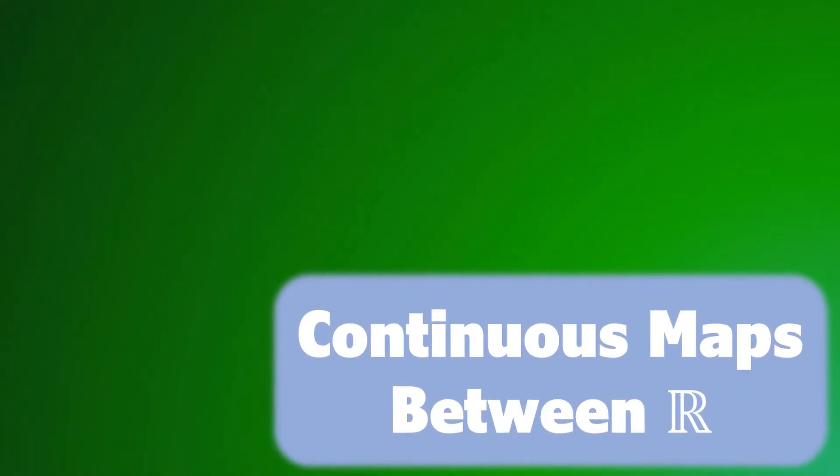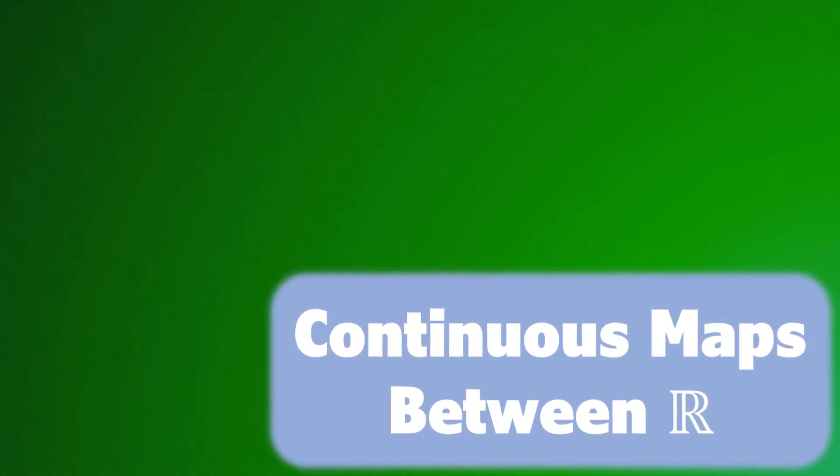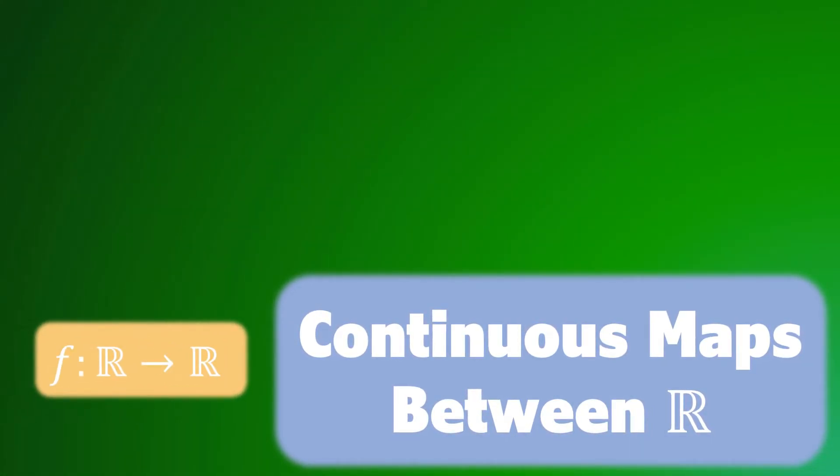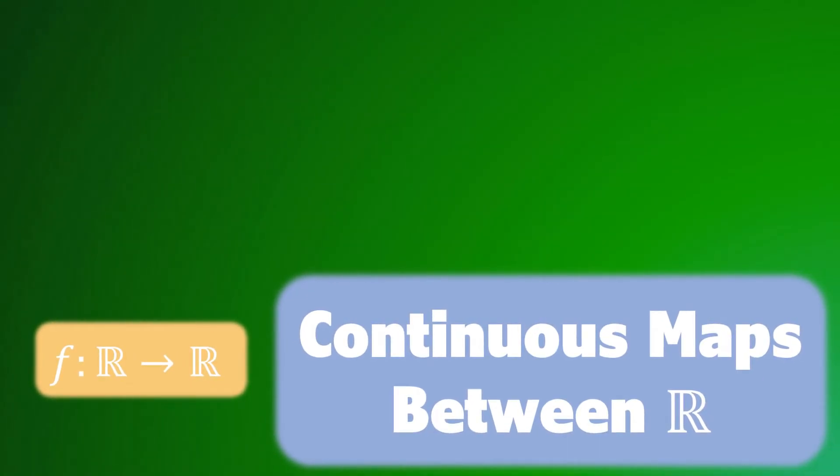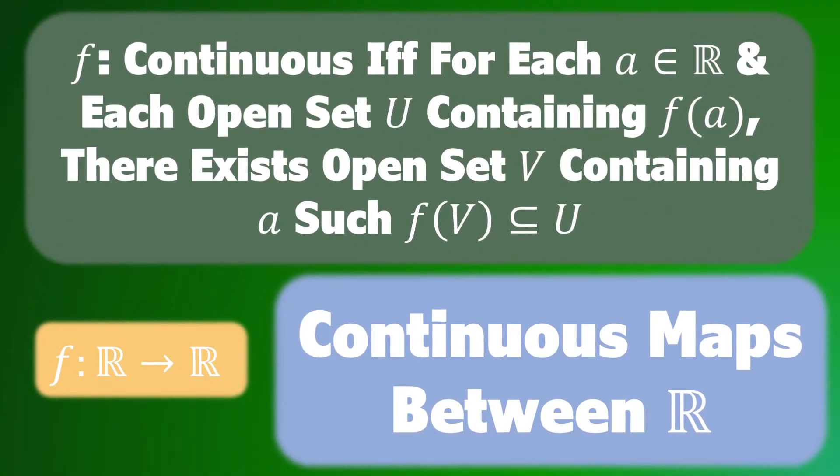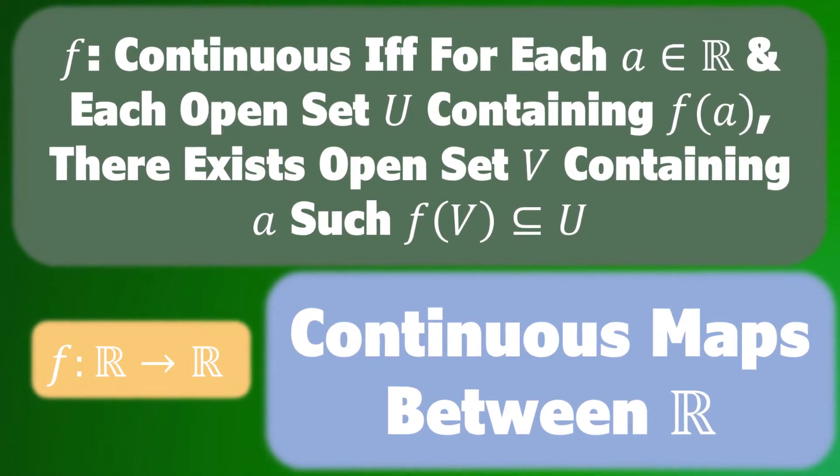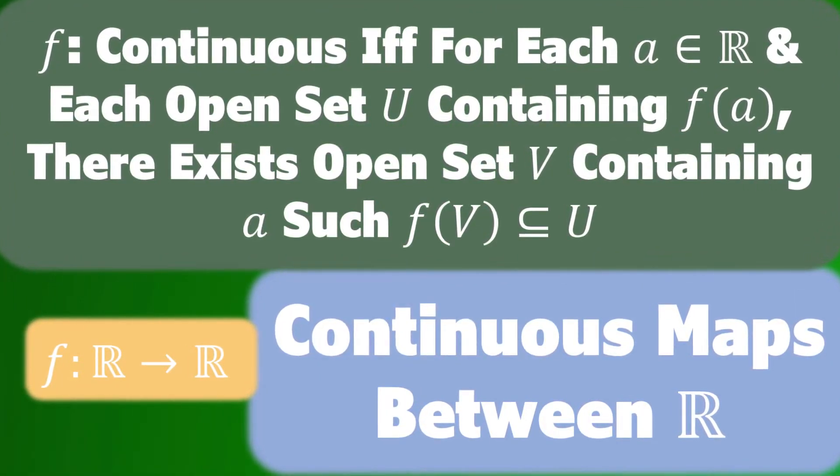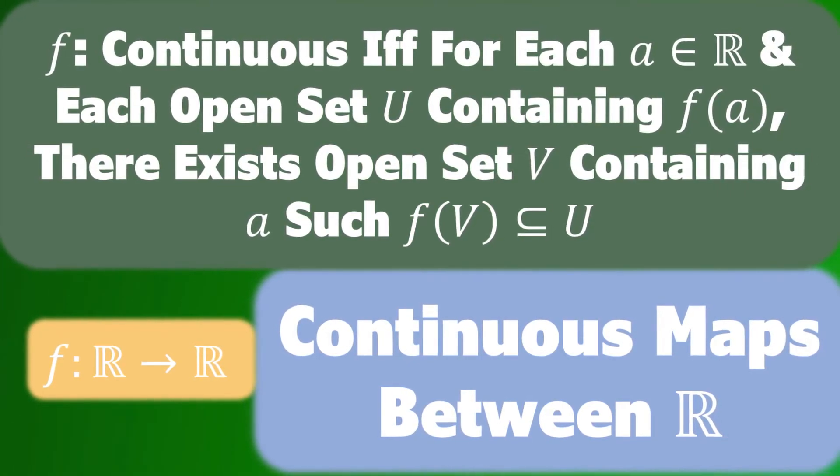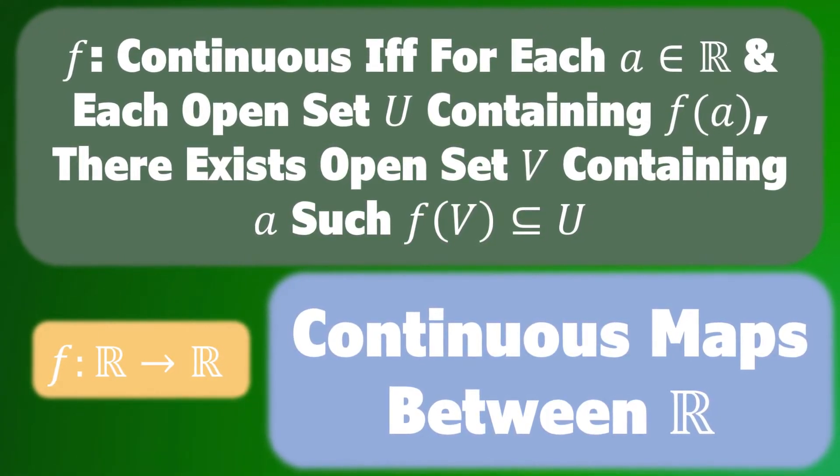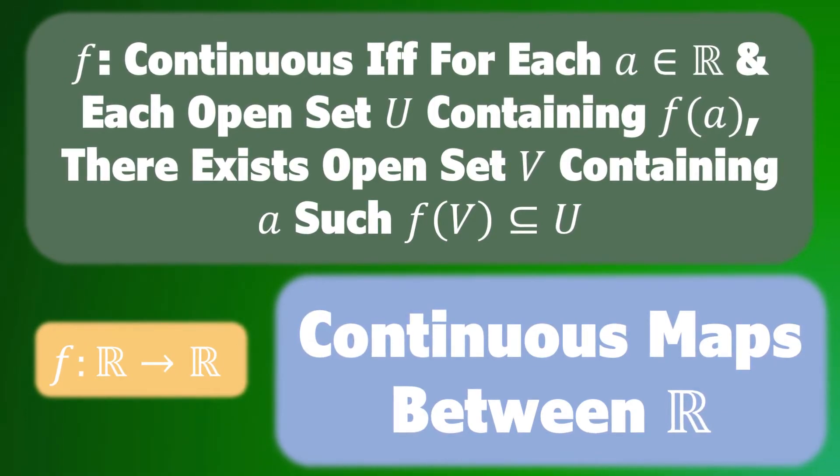From this, we can give a definition of continuous maps between real numbers. Hence, let f be a function mapping from ℝ to itself. Then, f is continuous if and only if for every a in ℝ and for each open set U containing f(a), there exists an open set V containing a such that f(V) is a subset of U.